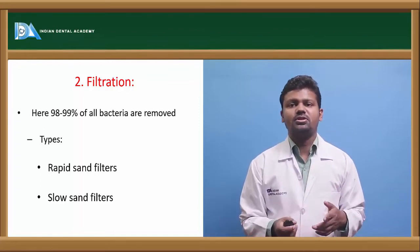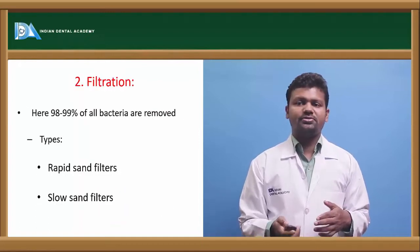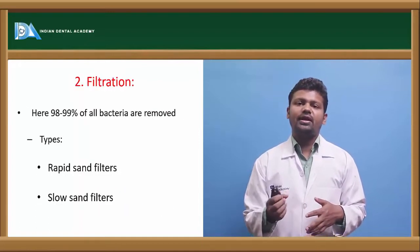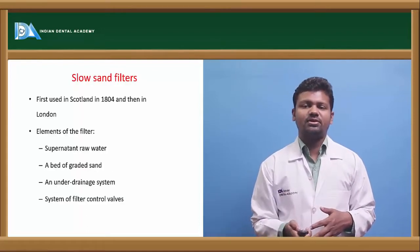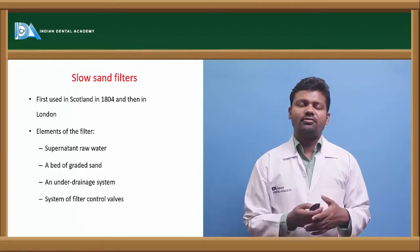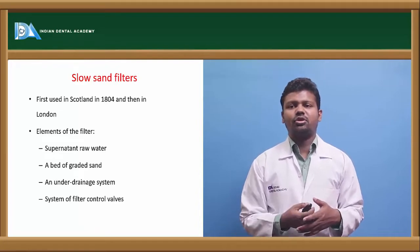The next process after storage is filtration, about 98% to 99% of the bacteria are removed. There are two types of filters: rapid sand filters and slow sand filters. Slow sand filters were started in Scotland.